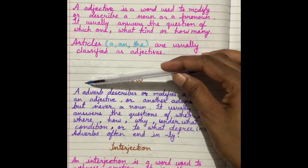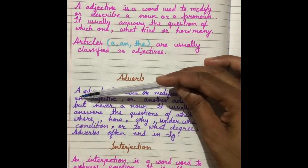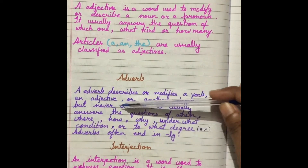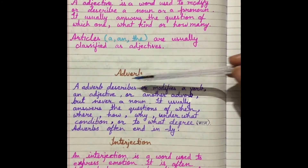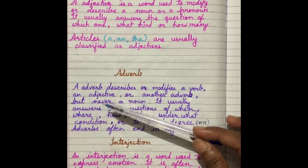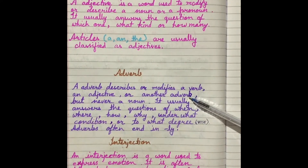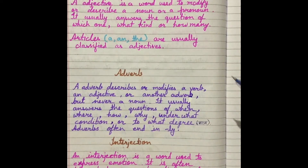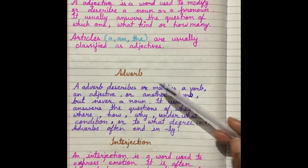Then adverb. An adverb describes or modifies a verb, an adjective, or another adverb, but never a noun. Jo adverb hoti hai woh modify karti hai kisi verb ko, kisi adjective ko, aur kisi doosre adverb ko — but never a noun, ek noun ko kabhi bhi modify nahin karti. Words that modify a noun are called adjectives, not adverbs.